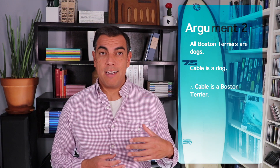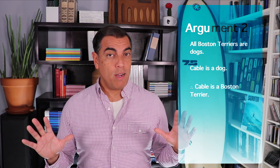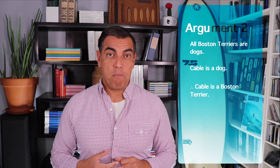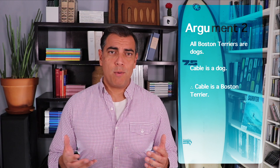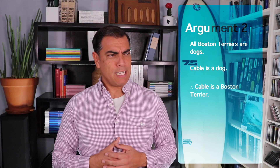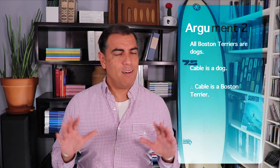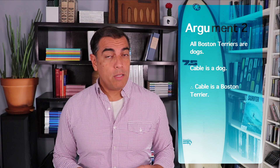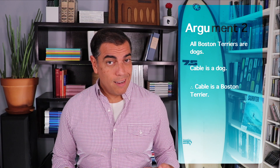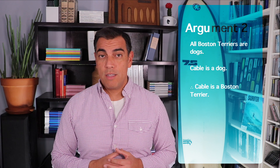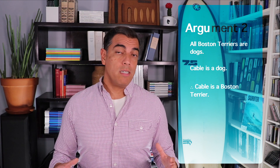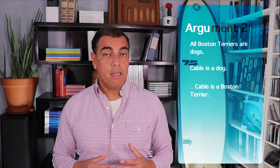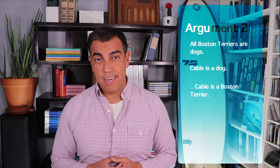We're going to use my dog, Cable, as an example. I didn't name the dog — my kids named the dog after that Marvel superhero. But for reasons that will become clear in a second, I'm not going to tell you what kind of dog it is. So let's check this argument out: all Boston Terriers are dogs; Cable is a dog; therefore, Cable is a Boston Terrier.